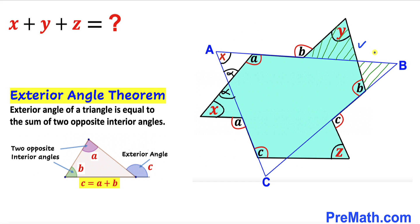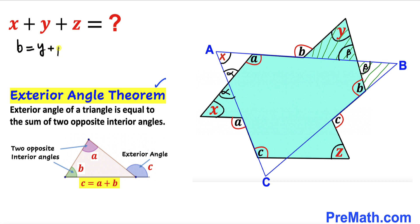Now let's focus on these two triangles. Let me call this angle beta. Then this angle has got to be beta as well, since these are two vertical angles. Now let's apply the exterior angle theorem on this triangle — this is our exterior angle, so we can write angle b equals angle y plus angle beta. Applying the theorem again, this angle has got to be y, since this angle is our exterior angle and equals the sum of the two opposite interior angles.